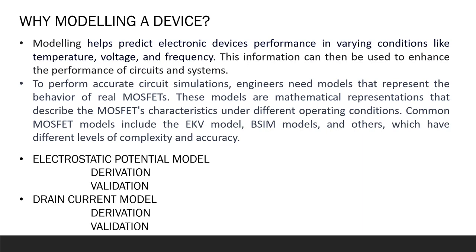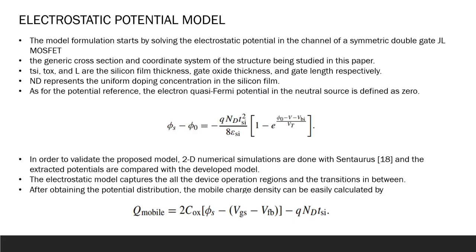There are two models which we are going to undertake in this paper: electrostatic potential model and drain current model. For each model we are going to see the derivation and the validation. The model formulation starts by solving the electrostatic potential in the channel of symmetric double gate junctionless MOSFETs. We are going to undertake physical parameters like silicon thickness, oxide thickness and gate length. ND represents the uniform doping concentration in the silicon film.